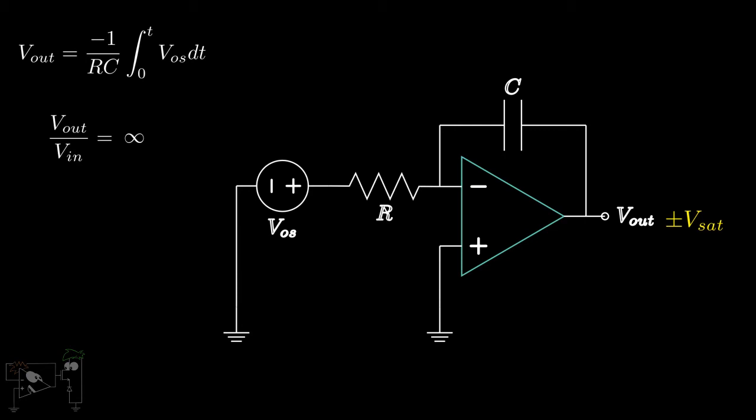This problem of offsets is quite serious in integrators as the op-amp output saturates almost instantly, even if we have no input, rendering the circuit useless. To solve this problem, we make slight modifications in our circuit.